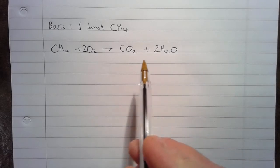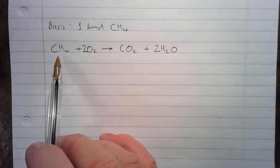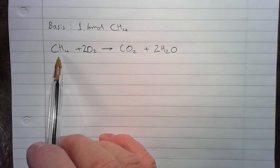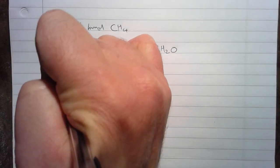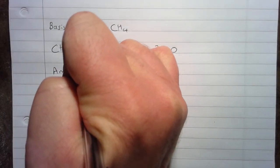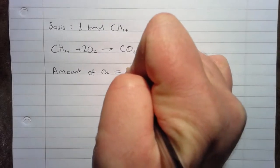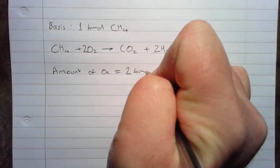We can see from this to burn 1 kmole of CH4, we will need 2 kmoles of oxygen. So we can write that down. Amount of O2 equals 2 kmoles.